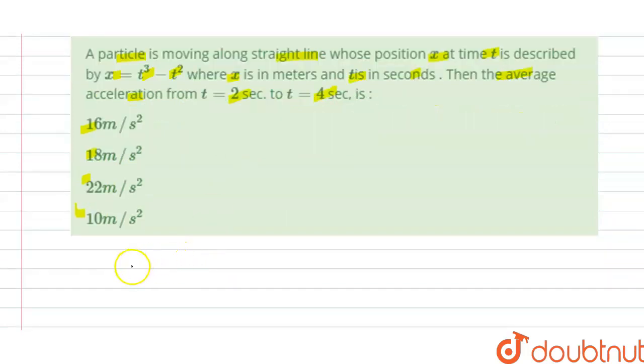So the solution of this question is: we have the particle distance is moving along x, that is t cube minus t square. And we have velocity is rate of change of distance with respect to time.